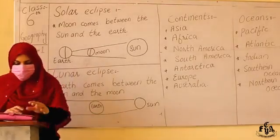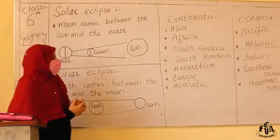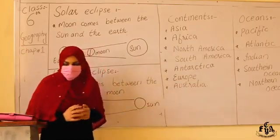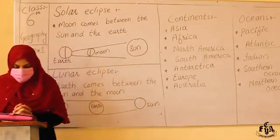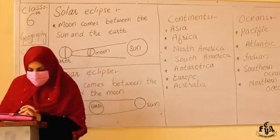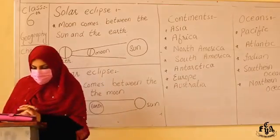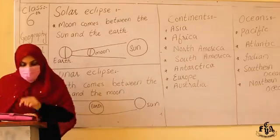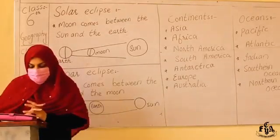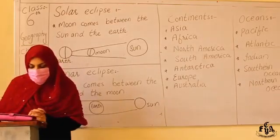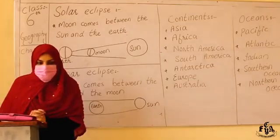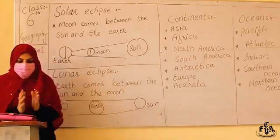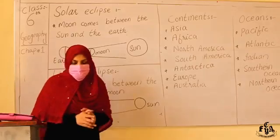Now let us discuss the continents. The total surface area of the Earth is about 510 million square kilometers, out of which about 29% is comprised of land and 71% is covered with water.